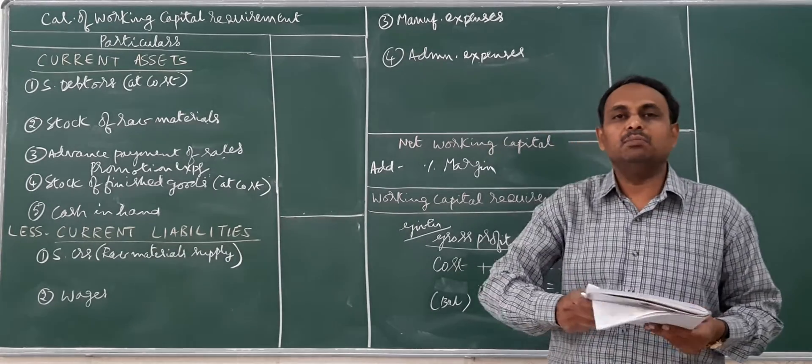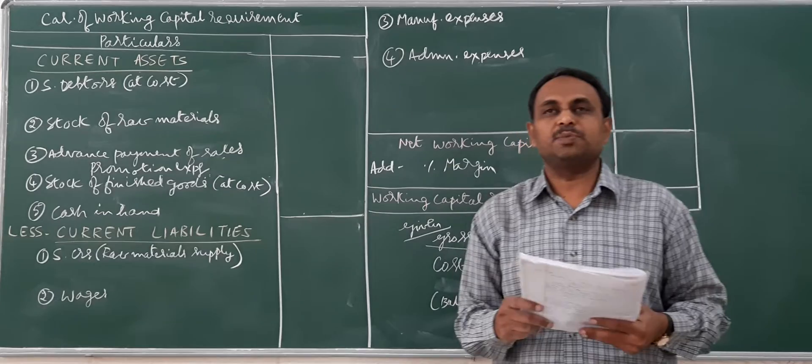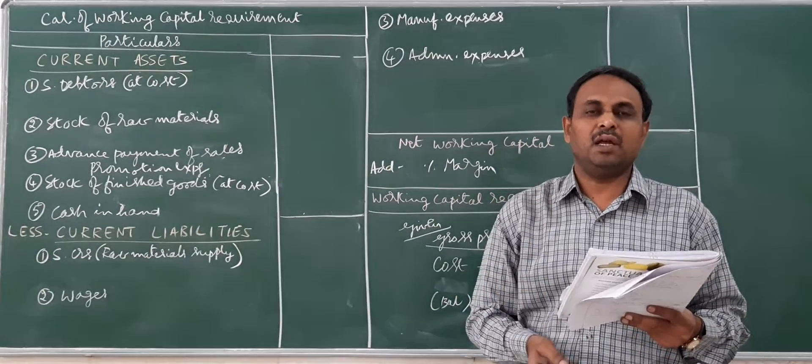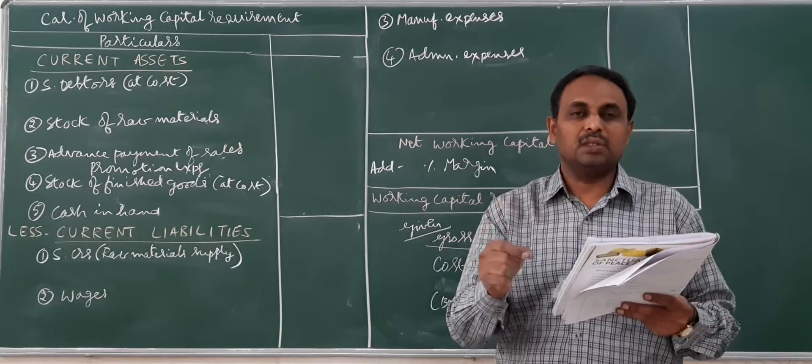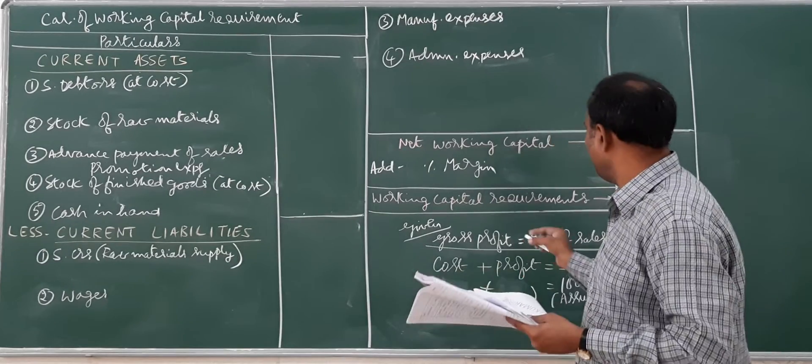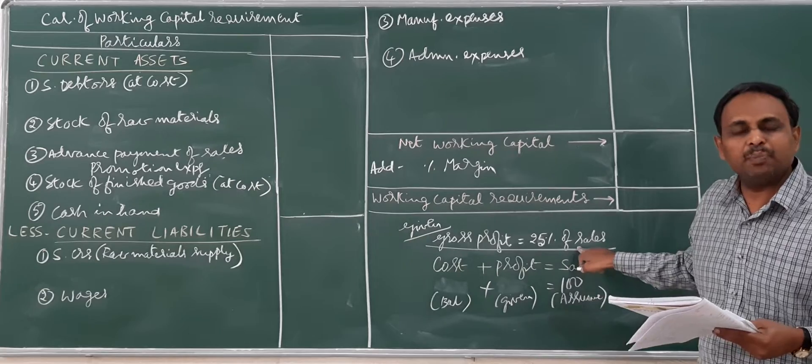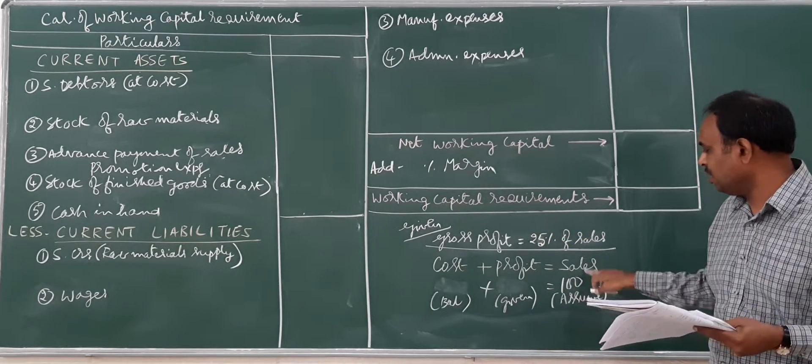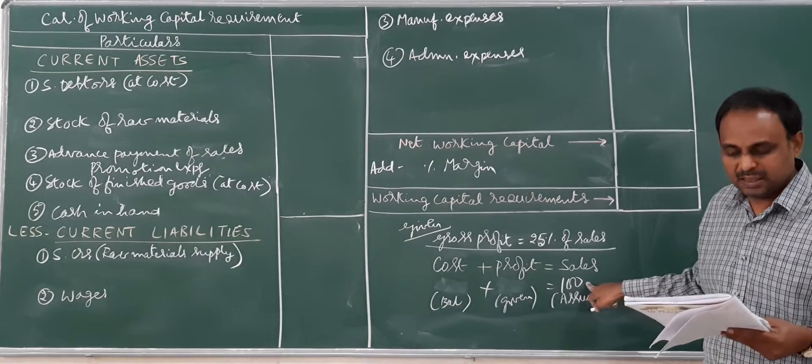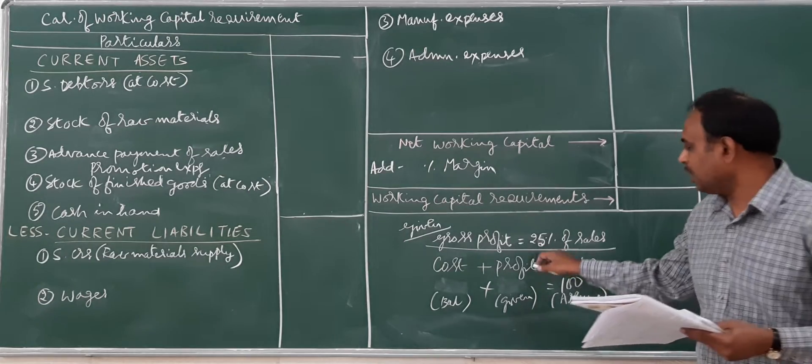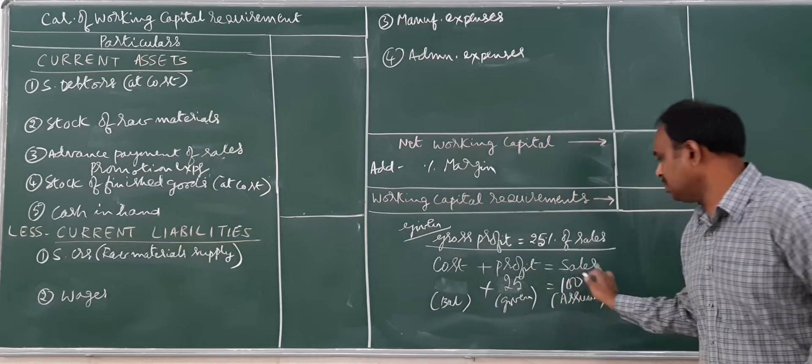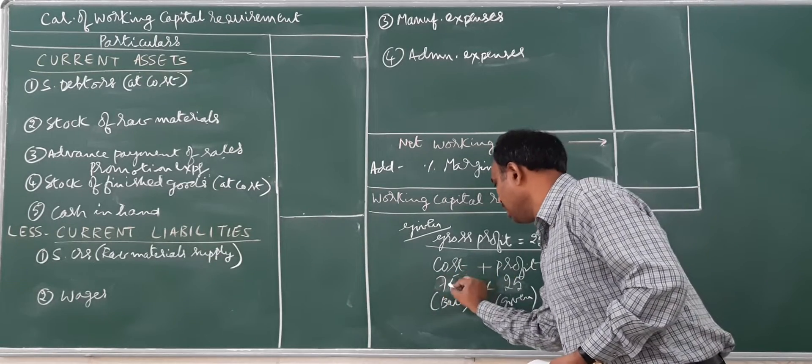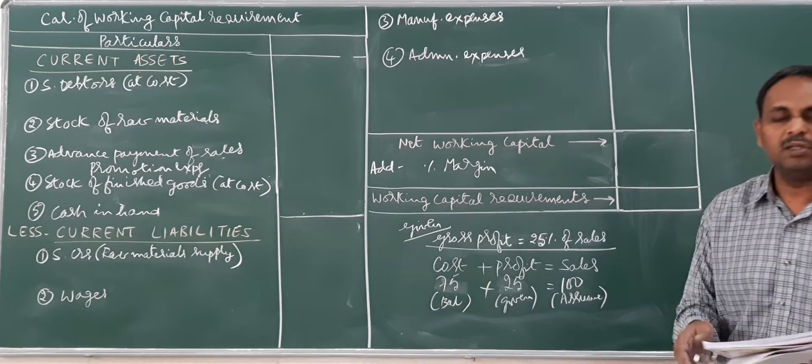We move on to the next problem, very similar to the previous problem but with one or two new adjustments. The first information given is that profit is 25% of sales. So if sales is 100%, then profit will be 25%, and cost will be 75% (100 minus 25).